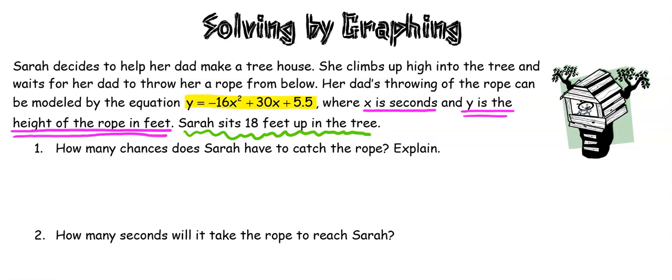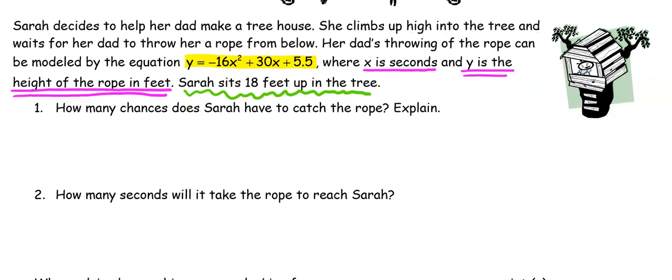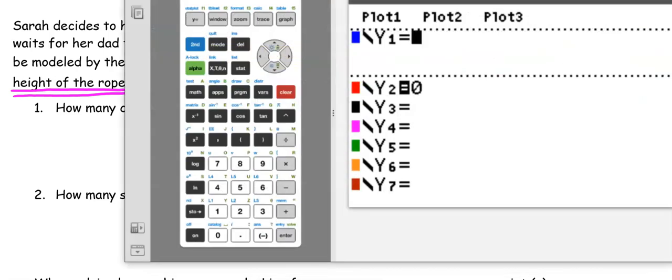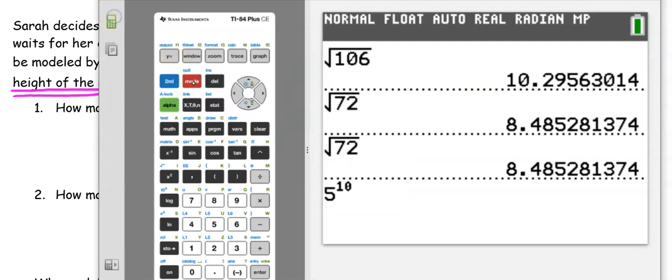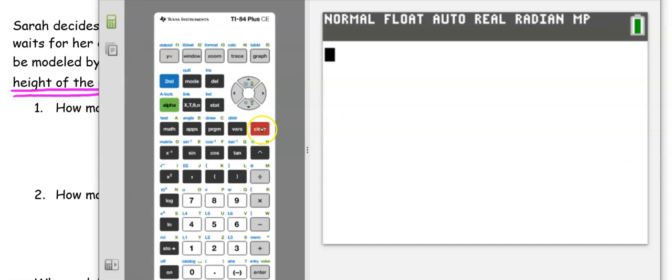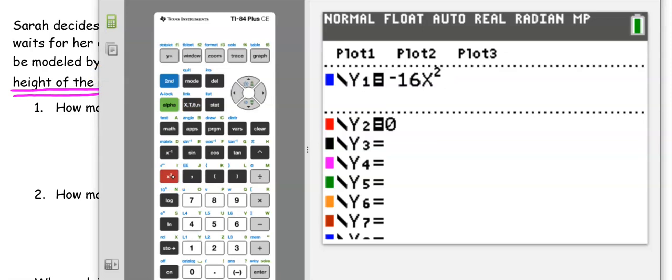Alright, so her dad's throwing her the rope. How many chances does Sarah have to catch the rope? Explain. Alright, so we're going to need our calculator for this one. So if you don't have your calculator out, go ahead and press pause and get it. So we have our calculator. We are going to go into our graph. So again, if you're on your home screen, you're going to hit the y equals button and we're going to enter in that equation that we were given, negative 16x squared plus 30x plus 5.5.